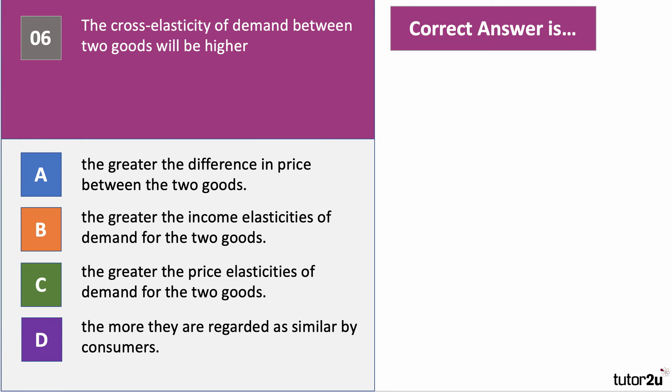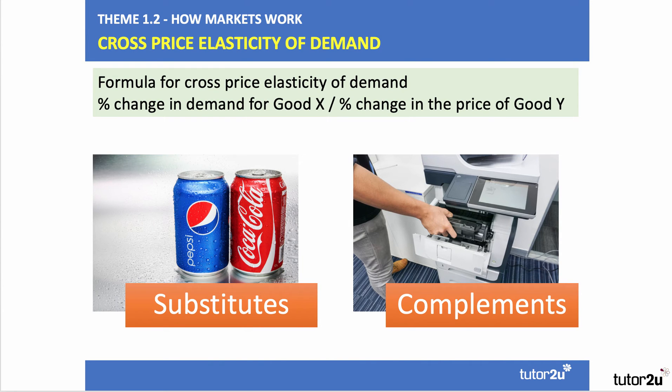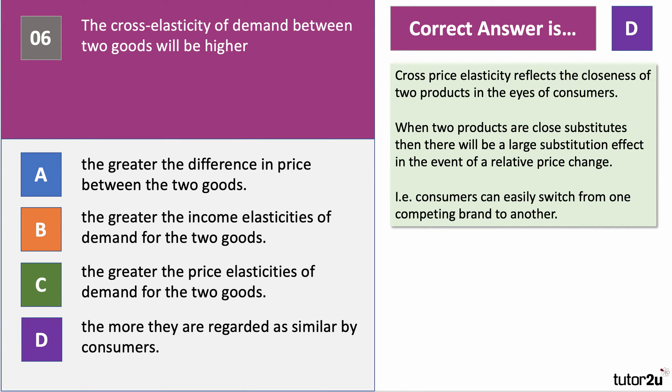Have a go at question six. A cross price elasticity of demand between two goods will be higher — which option, A, B, C or D? Cross price elasticity refers to the closeness of the relationship between two related products. The correct answer is D. When products are close substitutes — like Coca-Cola and Pepsi, or two types of shampoo — a small change in price can lead to quite a big substitution effect, with people switching easily from one competing brand to another.